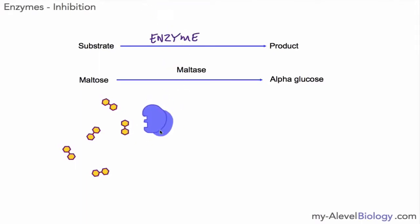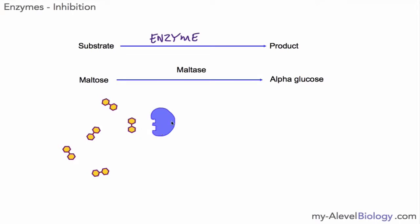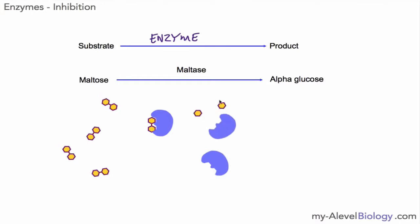We mentioned the lock and key model for enzyme action, and also an alternative where the active site is not exactly complementary but changes shape slightly to accommodate the substrate — that's the induced fit model. For today's video I'll keep to the lock and key model to keep it simple. The substrate fits into the active site, we have our enzyme-substrate complex, then our enzyme-product complex, and the product is alpha glucose. This is just a quick recap; there is more detail in two previous videos.